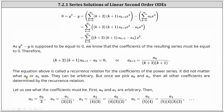It does not matter what a sub zero and a sub one are — they're arbitrary. But once we pick a sub zero and a sub one, then all the other coefficients are determined by the recurrence relation. Because a sub zero and a sub one are arbitrary, let's find the formulas for a sub two through a sub five. For a sub two, k is equal to zero, which gives us a sub two equals a sub zero divided by two times one, or just two. To find a sub three, k is equal to one, giving a sub three equal to a sub one divided by the product of three and two.